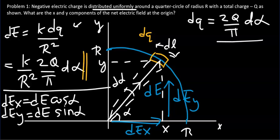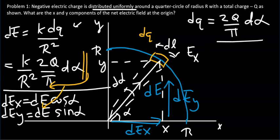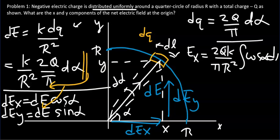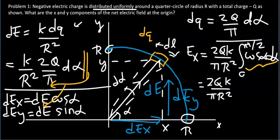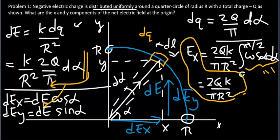To compute the total x-component, we substitute and integrate, taking the constants out: Ex = (2Qk)/(pi·r²) times the integral of cos(alpha)·d_alpha. The limits run from alpha = 0, when the element is at the x-axis, to alpha = pi/2 when the element is at the y-axis. This integral has a value of 1.